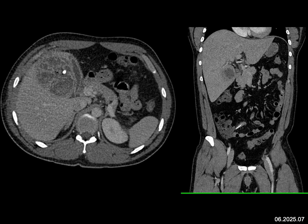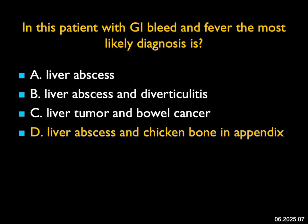I don't think this is a liver tumor and bowel cancer. Rather, this is a liver abscess, and that linear calcification or high-density structure is actually a chicken bone. The patient had a perforation of bowel secondary to the chicken bone and then developed an abscess. A really nice example — you've got to watch out for those chicken bones.